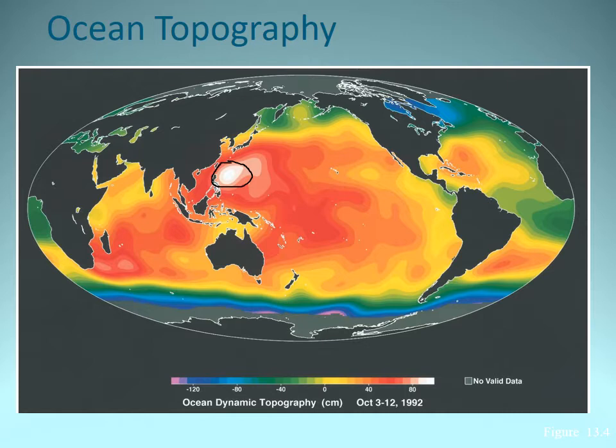The reason comes down to there being a typhoon just off the coast, just south of Japan and off the coast of China. If you remember from chapter seven with hurricanes and typhoons, the low pressure in those systems is so low that the water can actually rise. That's what's happening in this picture.